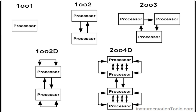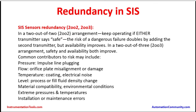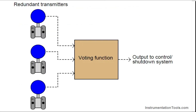In a two-out-of-three (2oo3) arrangement, both safety and availability improve. With three transmitters and the system designed to operate in a 2oo3 combination, both safety and availability are improved.